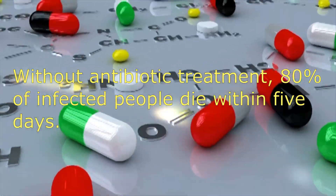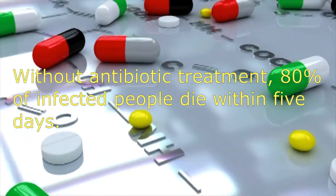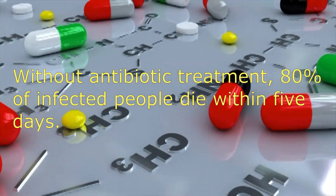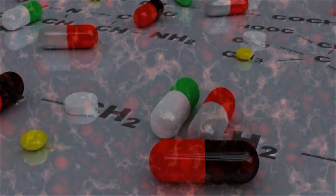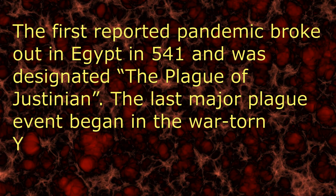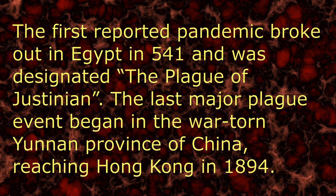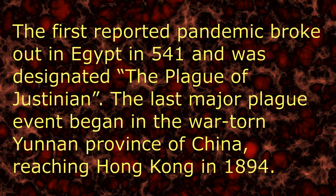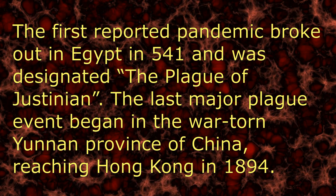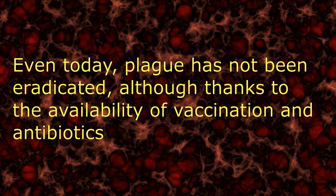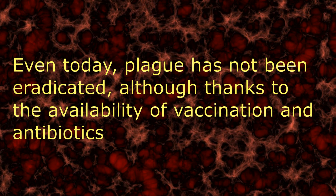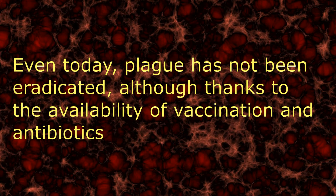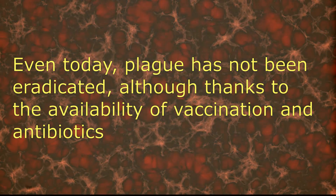Infection may spread throughout the bloodstream and affect respiration in the lungs. Without prompt antibiotic treatment, 80% of infected people die within five days. In the United States alone, 1,040 confirmed or probable cases of plague occurred between 1900 and 2016, 80% of which were classified as the bubonic form. In recent years, incidence has ranged from 1 to 17 cases per year, with most occurring in the rural West.